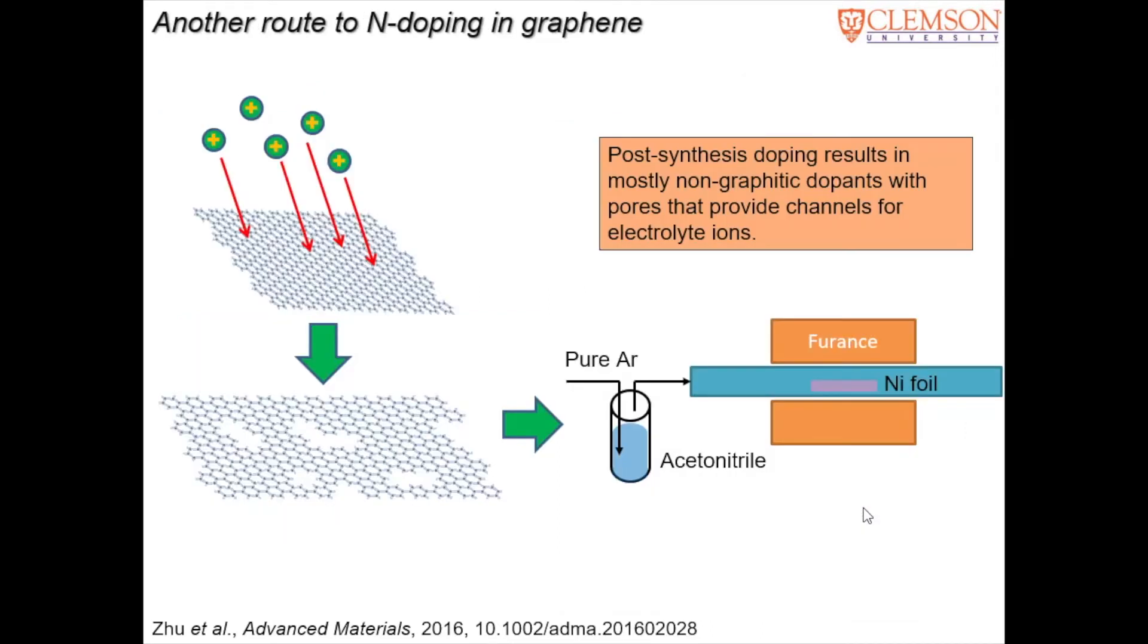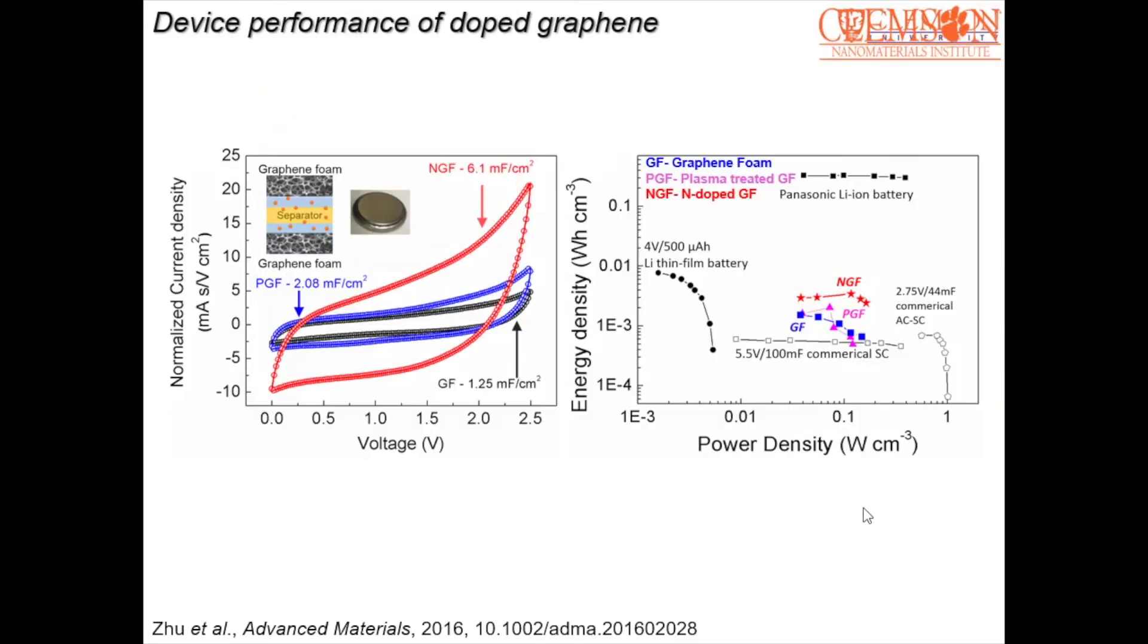So to do that, instead of just putting pores, what we did was we put pores first and then annealed it in acetonitrile so that these pores are filled with nitrogen dopants. So nitrogen has a lone pair of electrons, so it can contribute this lone pair of electrons to graphene and improve its electrical conductivity. And as we expected, by using nitrogen instead of just pores, as you can see in the red curve here, we get a much higher capacitance. And it is much more stable than either the porous graphene foam or just the normal graphene foam.